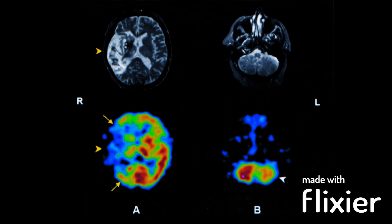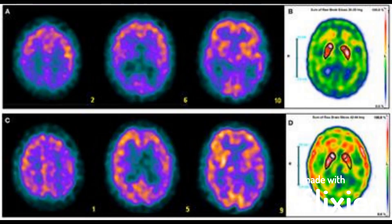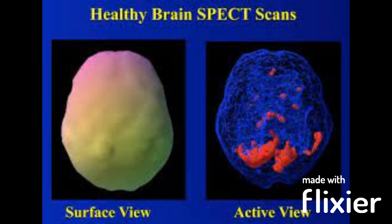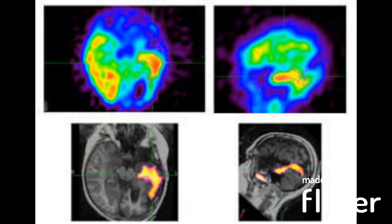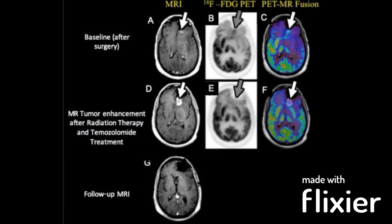اسپیکٹ سکین کے بارے میں جو چیز منفرد ہے وہ یہ ہے کہ یہ ساختی تصویر (سٹرکچرل فارمیٹ) کے بجائے دماغ کا فنکشنل فارمیٹ دکھاتا ہے۔ بلڈ فلو اور برین ایکٹیویٹی کا اندازہ لگا کر اسپیکٹ سکین برین فنکشن کے بارے میں قیمتی معلومات فراہم کر سکتا ہے۔ یہ خاص طور پر مرگی (اپیلیپسی)، الزائیمر ڈیزیز اور پارکنسن ڈیزیز جیسی حالتوں کی تشخیص اور نگرانی میں مفید ہو سکتا ہے جو برین فنکشن کو متاثر کرتی ہیں۔